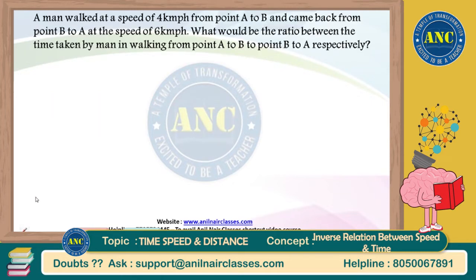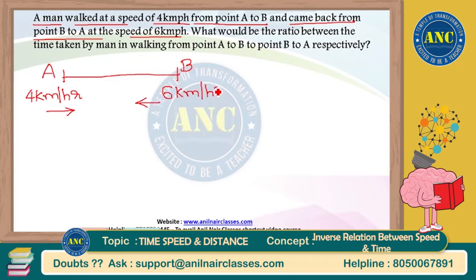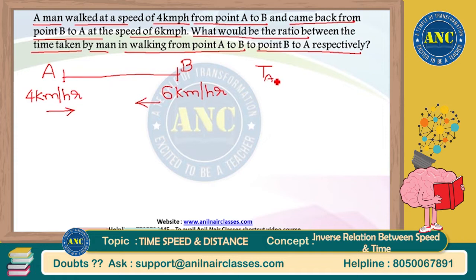Question three is a very easy question. A man walked at a rate of four kilometers per hour from point A to B, and came back from B to A at a speed of six kilometers per hour. What would be the ratio between the time taken from A to B and from B to A respectively? That time ratio is what they are asking.